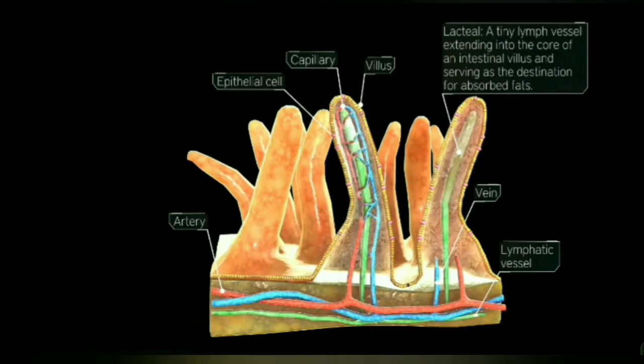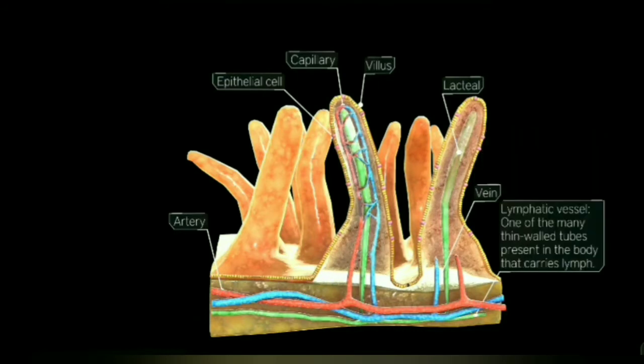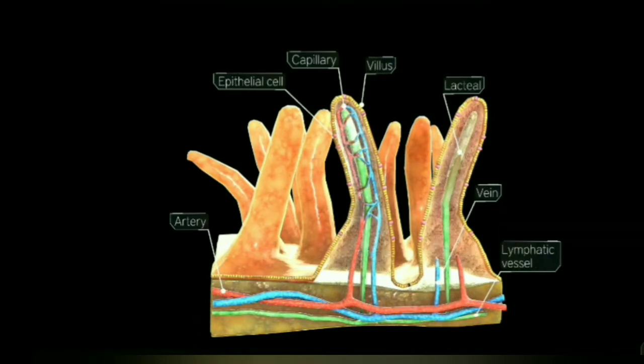Sixth one is vein. It's a type of blood vessel that mostly carries oxygen deficient blood from the body to the heart. Seventh one is lymphatic vessel. It is one of the many thin wall tubes present in the body that carries lymph. Now we will see how the glucose and fatty acids move into the villi.